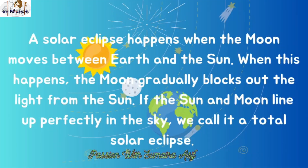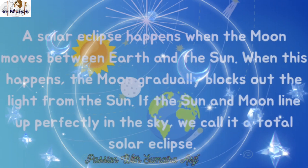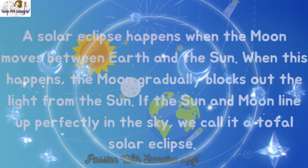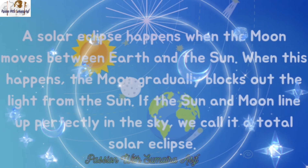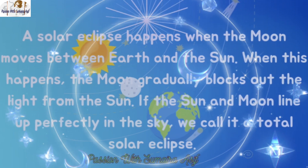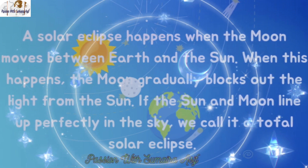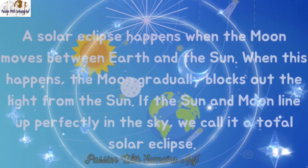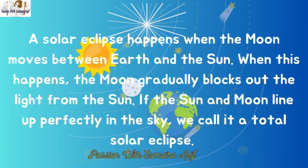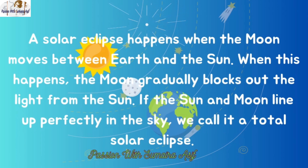A solar eclipse happens when the moon moves between earth and the sun. When this happens, the moon gradually blocks out the light from the sun. If the sun and moon line up perfectly in the sky, we call it a total solar eclipse.